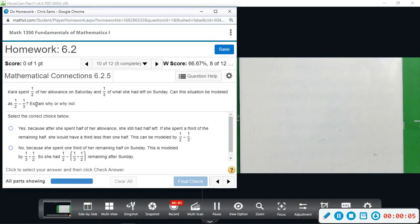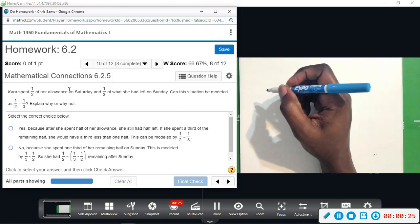Number 10 says Kara spent half her allowance on Saturday and one-third of what she had left on Sunday. Can this situation be modeled by one-half minus one-third? Why or why not? It will not be. In this case, let's just